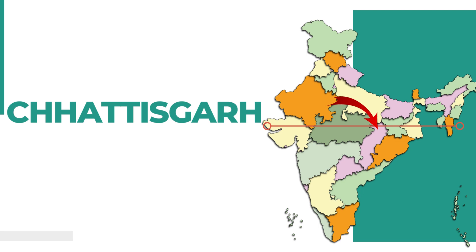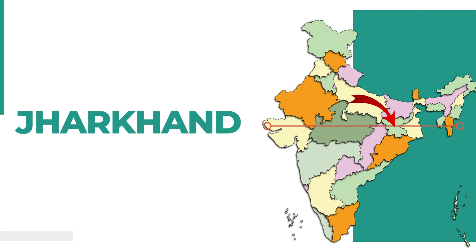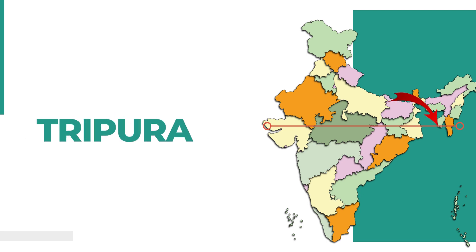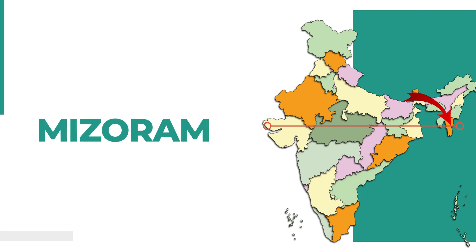Next is Chhattisgarh, then Jharkhand, West Bengal, and finally Tripura and Mizoram.